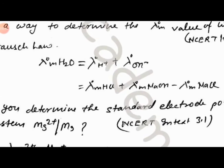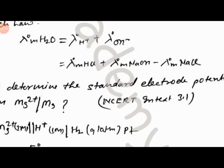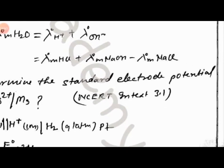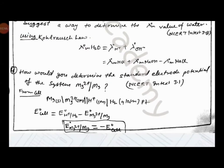Molar conductivity of H2O will be the sum of conductivity of H plus and OH minus. Lambda H2O equals lambda H plus plus lambda OH minus, which equals molar conductivity of HCl plus molar conductivity of NaOH minus molar conductivity of NaCl.